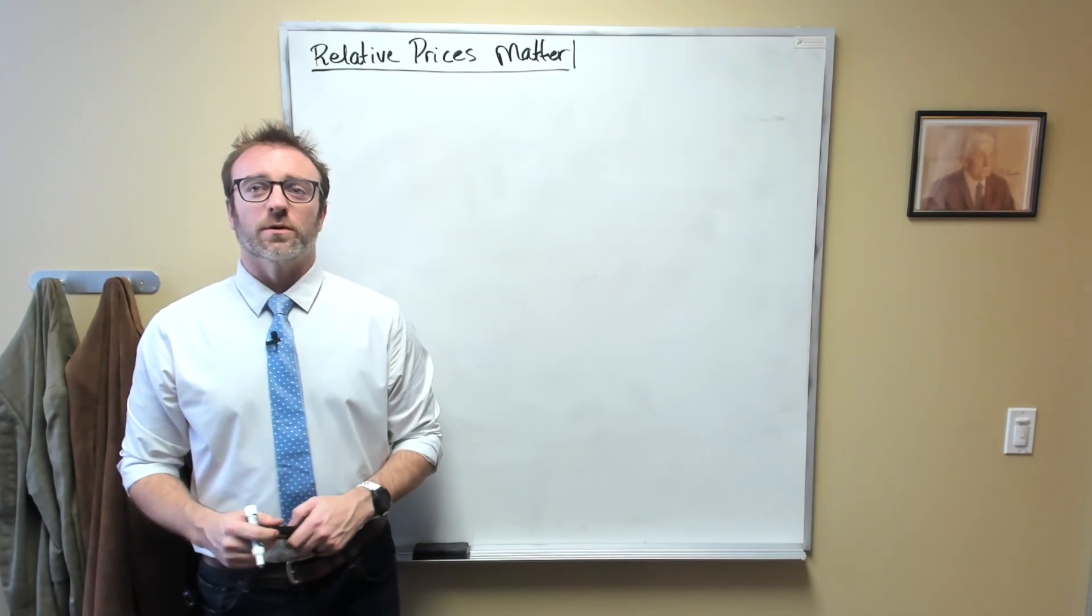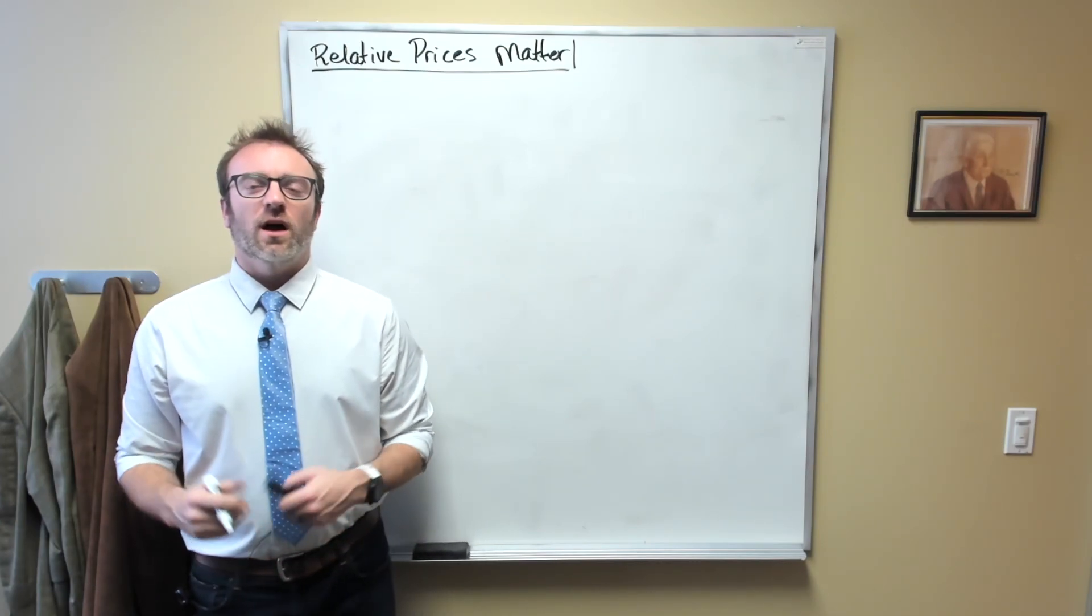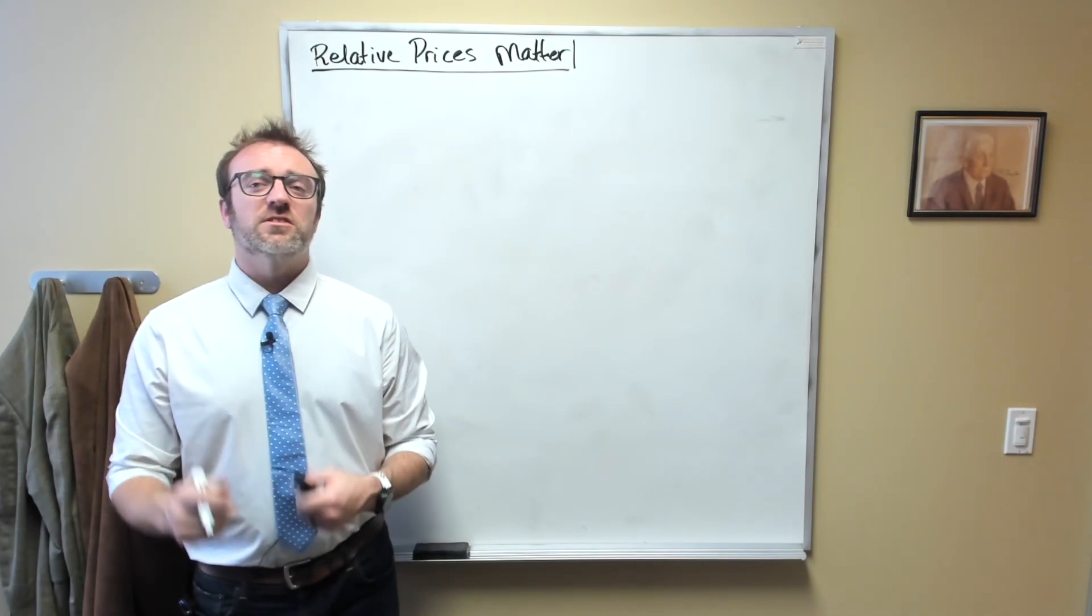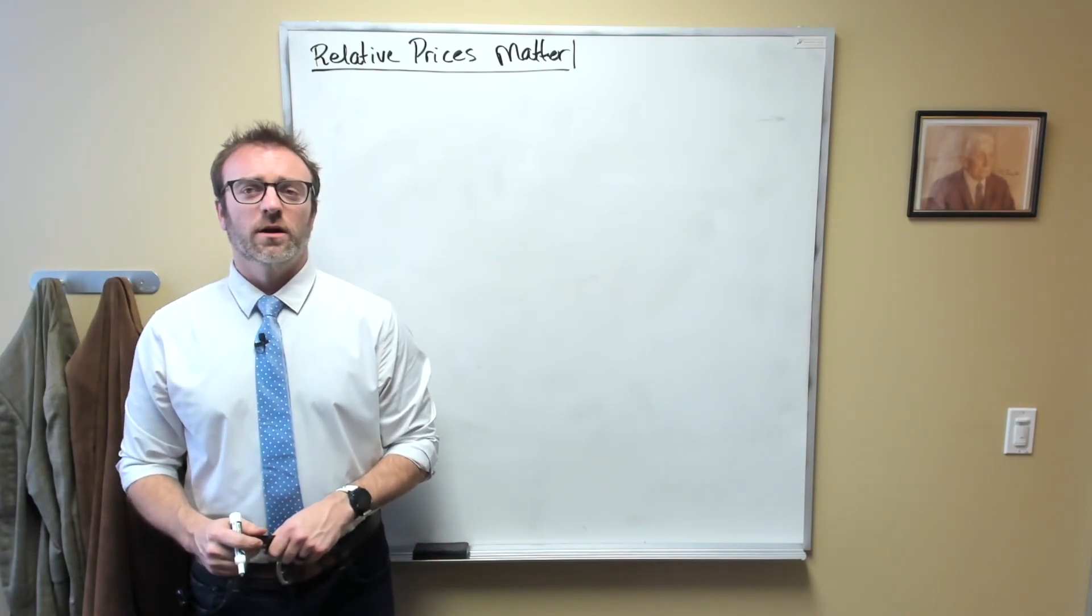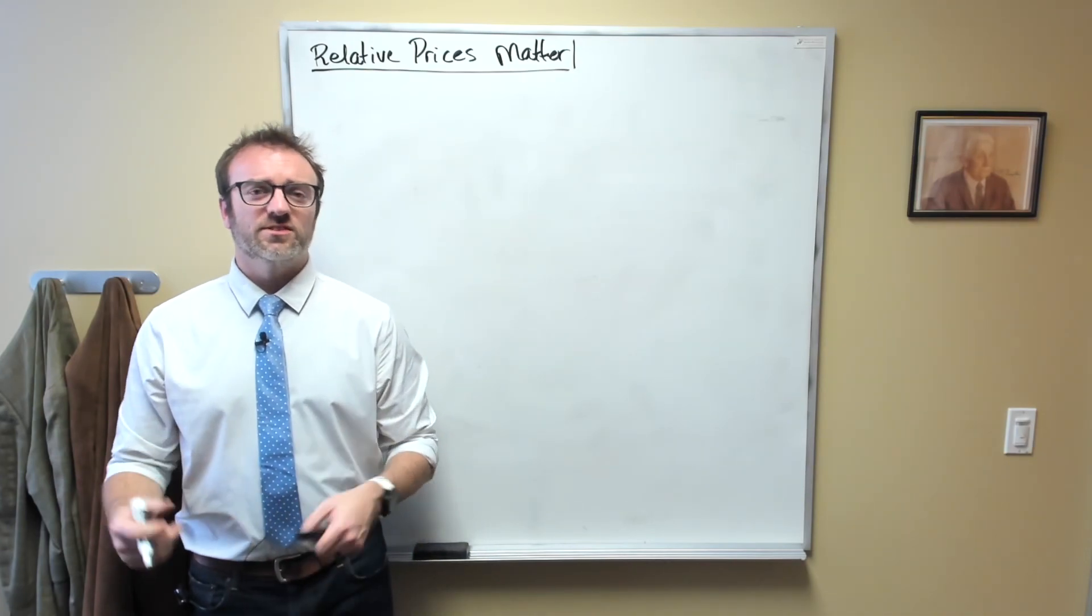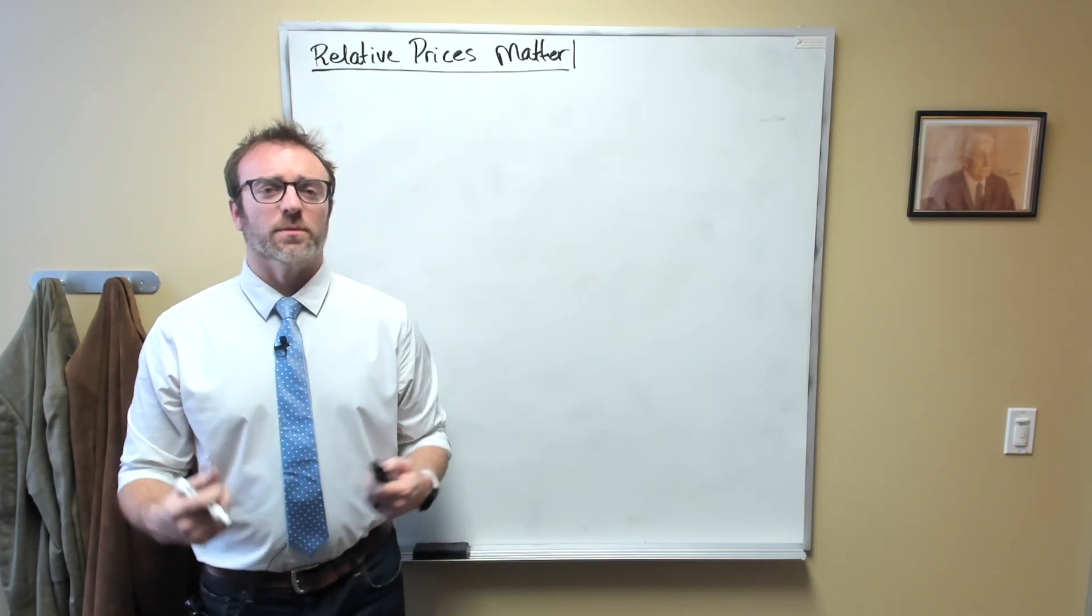What are those two goods we're comparing whenever we buy something? One of them is obviously the thing we're thinking about buying. The other is typically a substitute for that thing, but more broadly, it's whatever you would have done with those dollars instead. So once again, we're talking about the concept of opportunity cost.